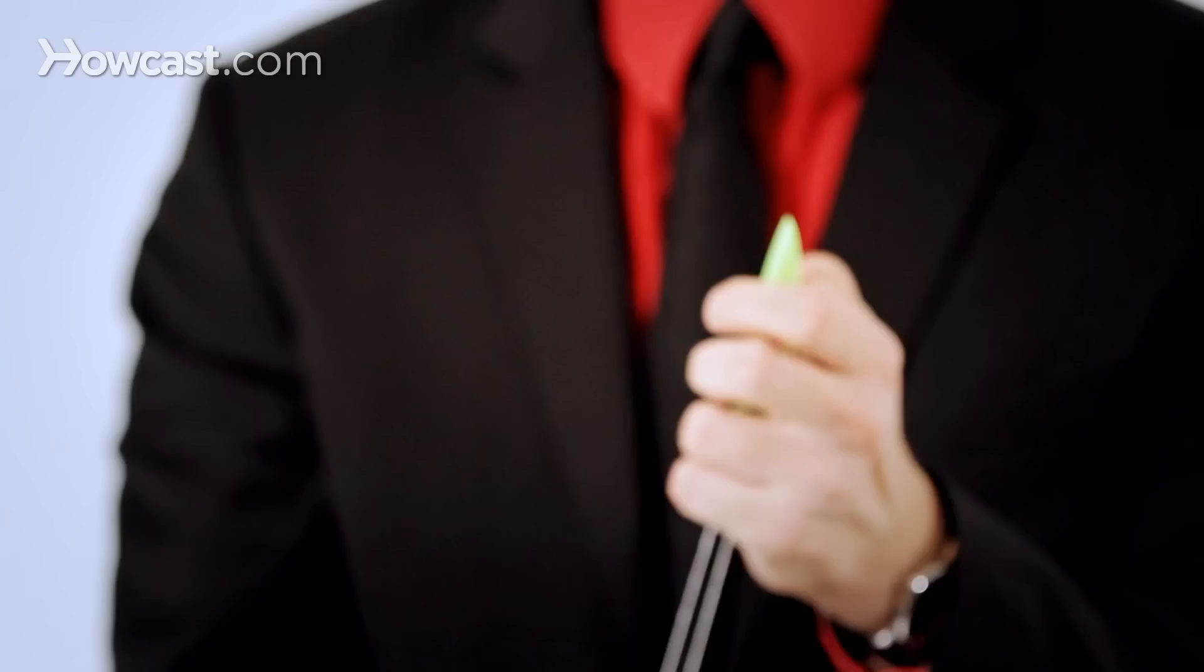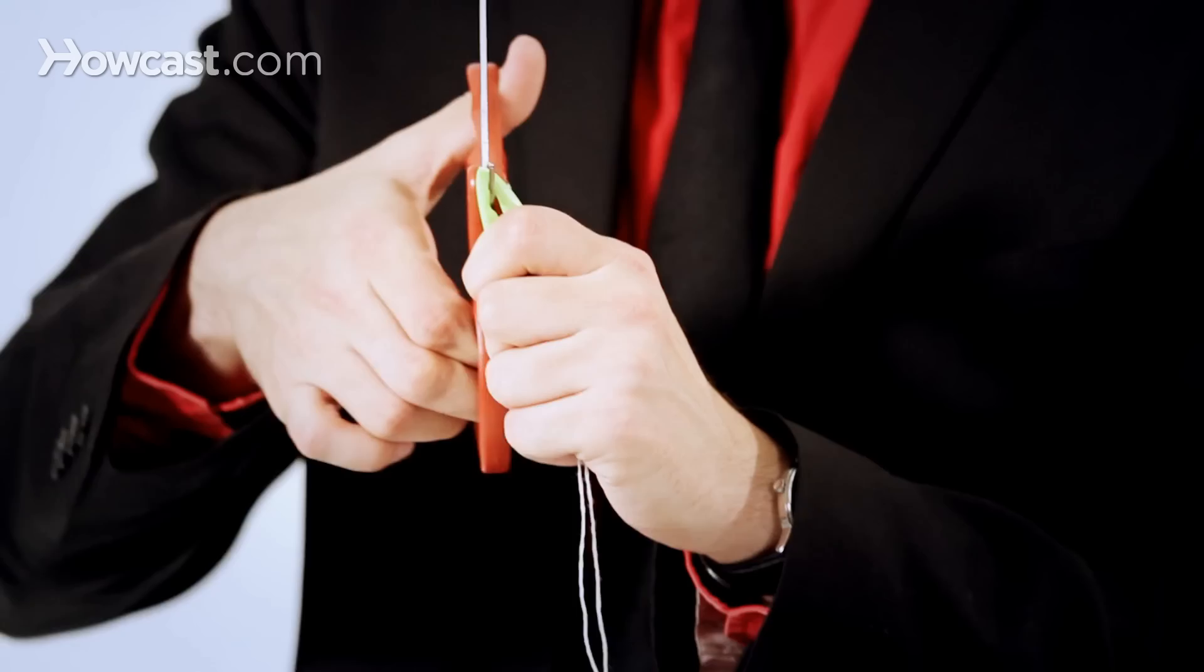You cover the part with the string with your fingers. This works better if you have a larger straw. And you take your scissors and don't cut through the string, because that will destroy the end of the trick. But you cut right through the straw.